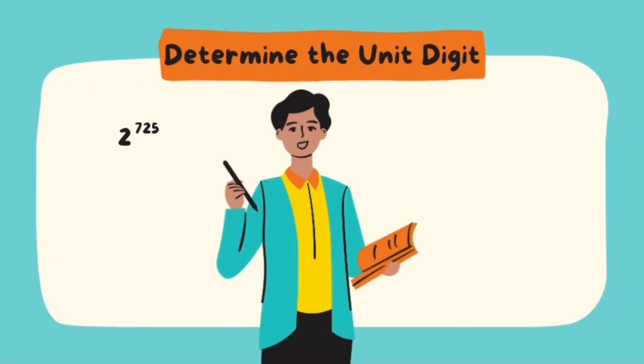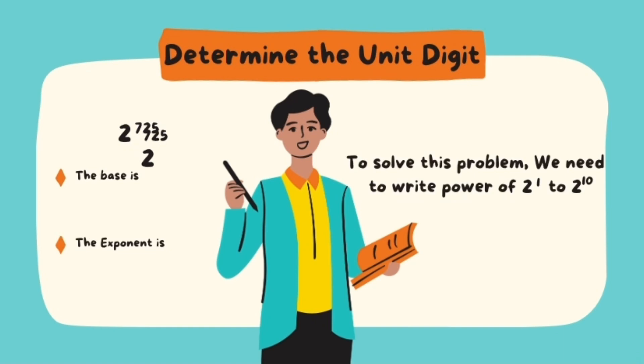First, let's determine the unit digit of 2 raised to the 725th power. Before we answer it, the base is the number 2 and the exponent is 725.